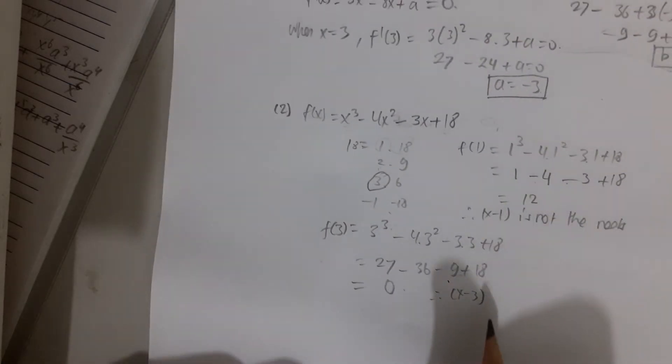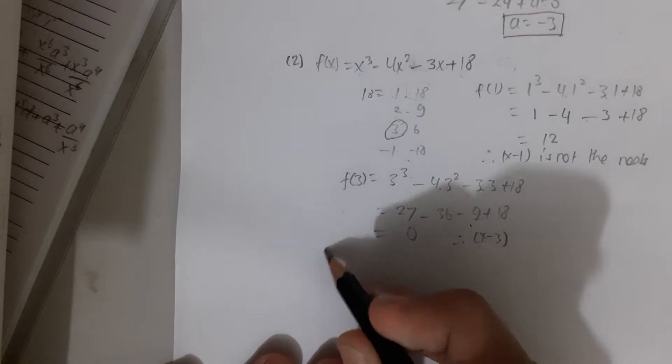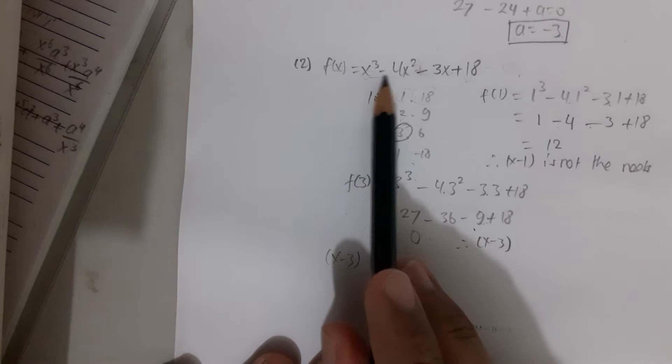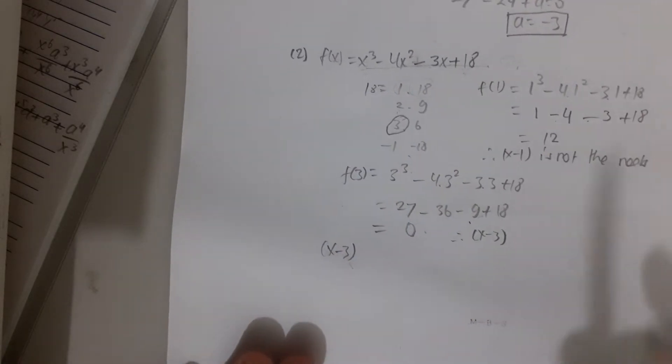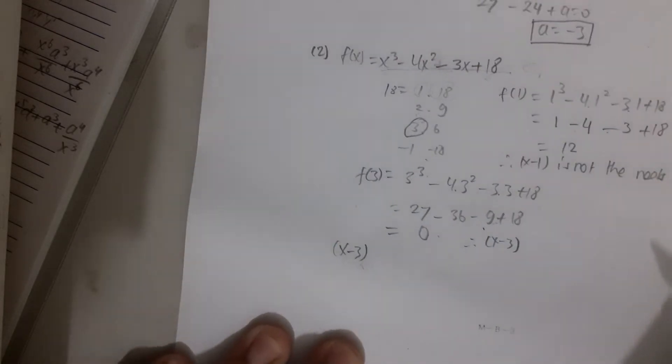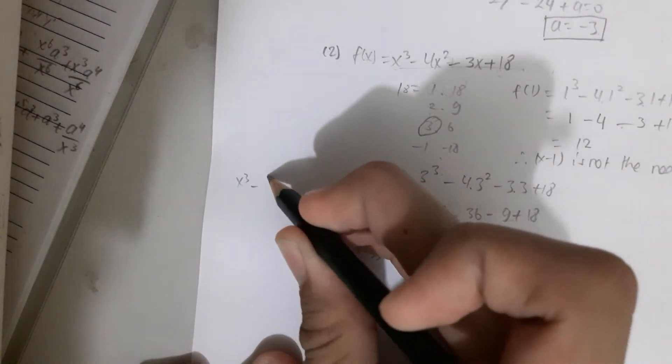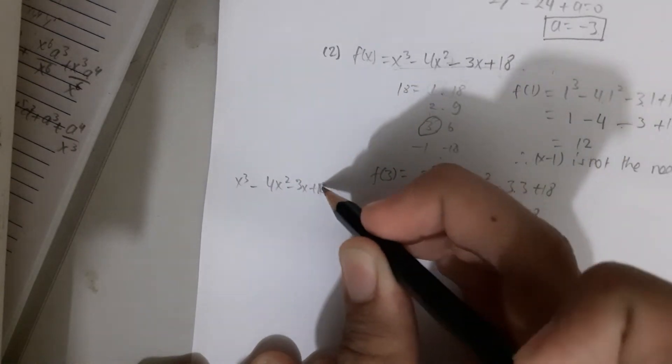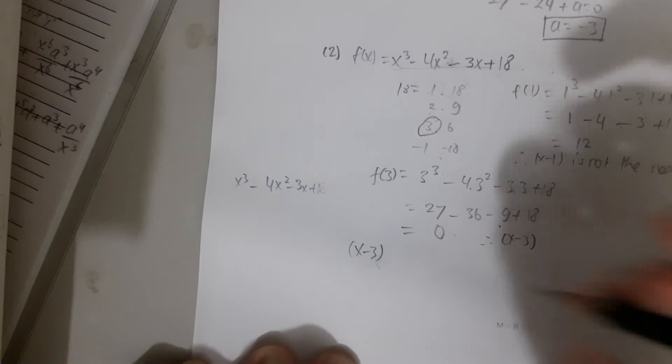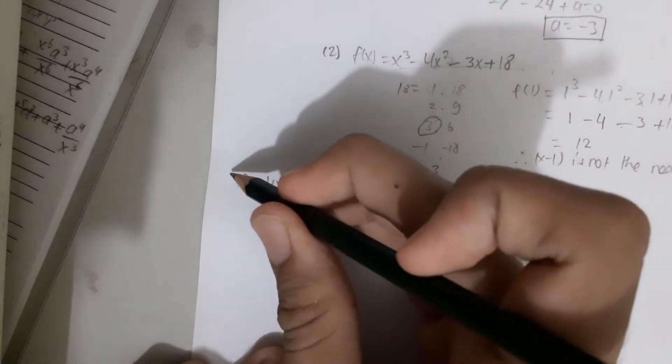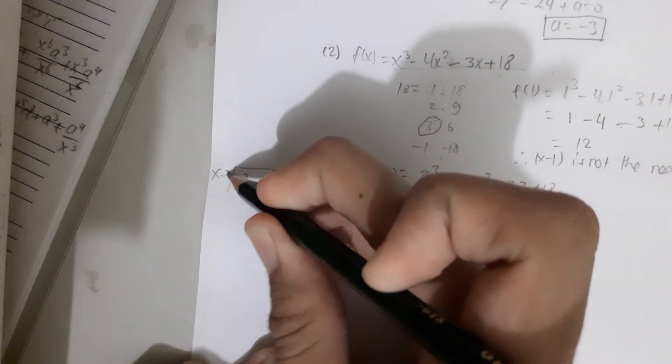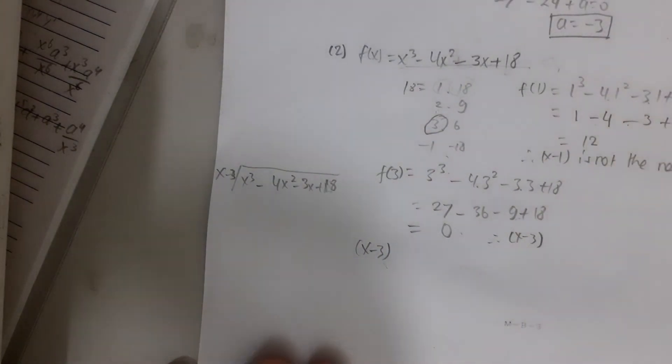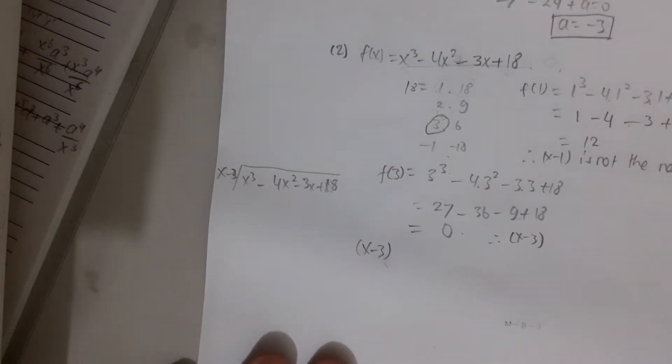27 minus 9 is 18. 18 plus 18 minus 36 is 0. So because f(3) is 0, therefore x minus 3 is one of the roots of the function. Then when we have x minus 3, so we keep our x minus 3. Now we are going to divide this function with x minus 3. But we are not going to do it in a direct way. What I mean is this method, where you just put this function this way and kind of divide it literally directly.